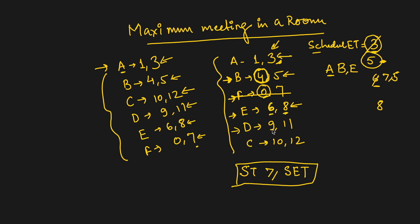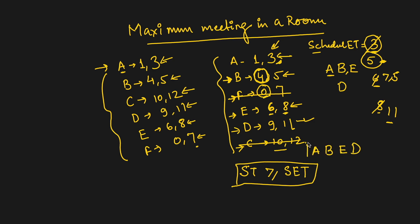The next meeting is D with start time 9, which is greater than the schedule end time of 8, so we can pick D as well. We update the schedule end time to 11. The last meeting is C with start time 10, and 10 is less than 11, so there is a conflict and we cannot pick C. Our final output is A, B, E, and D — four meetings without any conflict.